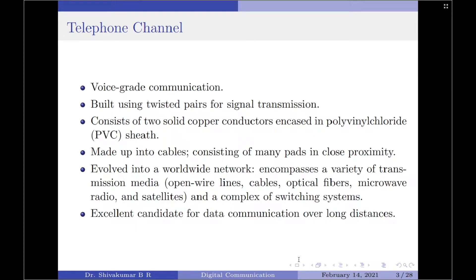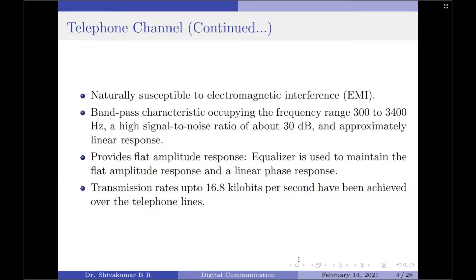During the last century, the telephone channel has evolved into a worldwide network encompassing a variety of transmission media such as open wire lines, cables, optical fibers, microwave radio, and satellites, as well as a complex of switching systems. This makes the telephone channel an excellent candidate for data communication over long distances, including the internet. However, twisted pairs are naturally susceptible to electromagnetic interference (EMI), and to reduce this effect the wires are commonly twisted.